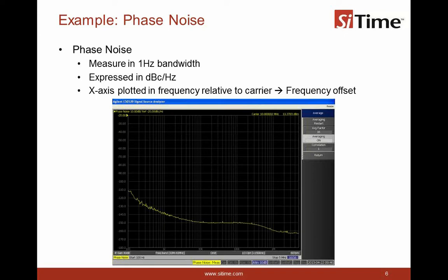The phase is measured in 1 hertz bandwidth and expressed as dBc per hertz. The C, dB refers to the ratio, as we discussed, noise related to signal. C means that it's relative to the carrier signal. C stands for carrier. And hertz refers to being specified in 1 hertz bandwidth.